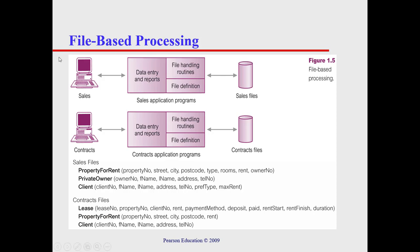In our example of a file-based system, we have two departments: the Sales department and the Contracts department. Both have their own specific application programs, and each application program pulls data from its own file systems. The Sales department pulls from Sales files and the Contracts department pulls from Contracts files. Both application programs have an interface for data entry and retrieving reports, as well as their own specific file handling routines and file definitions.